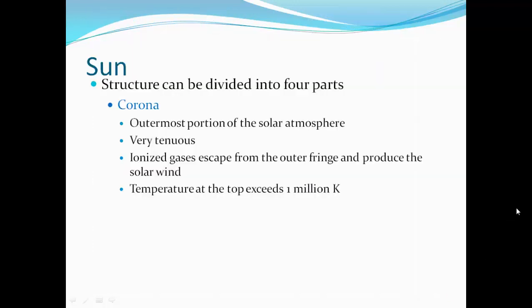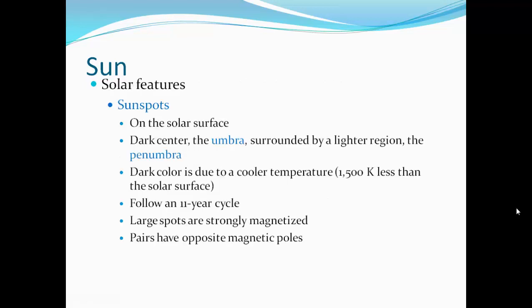The corona is the outermost portion of the solar atmosphere. It's very tenuous. Ionized gases escape from the outer fringe and produce a solar wind. Temperatures at the top exceed 1 million degrees Kelvin.